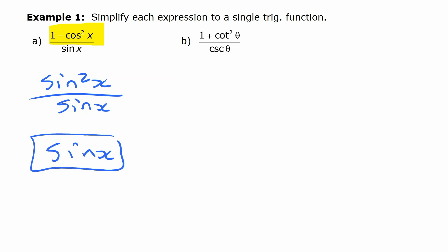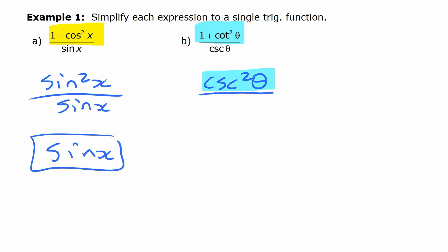The second one — if you recognize it looks like one of those identities, one plus cotangent squared — we can change that into cosecant squared. Then we're left with cosecant squared divided by cosecant theta on the bottom. In a similar way, cosecant squared divided by cosecant is just cosecant.